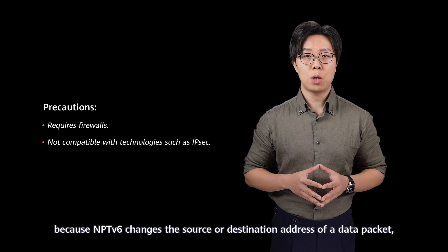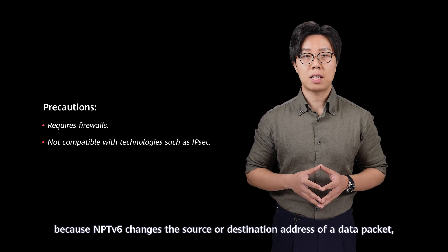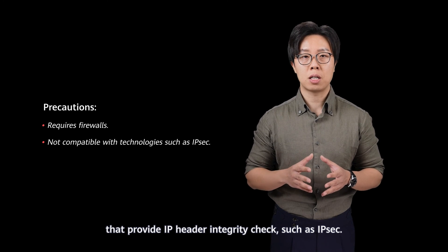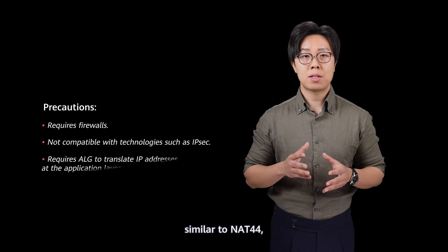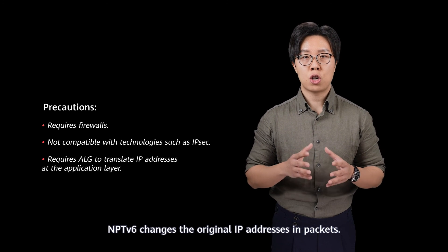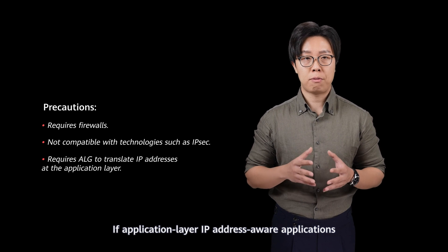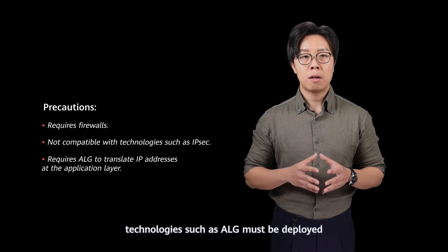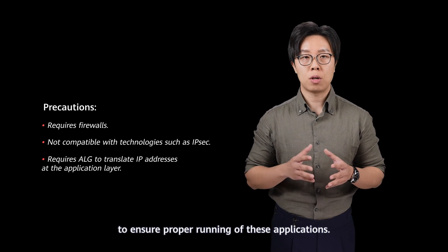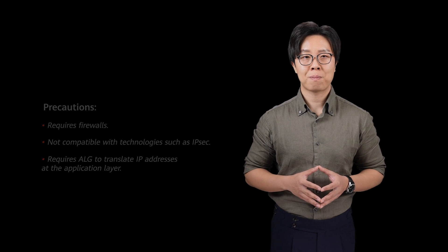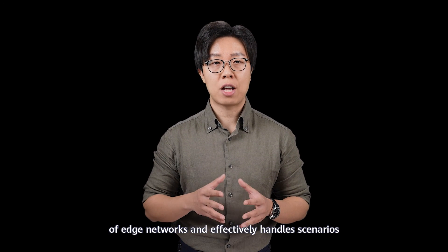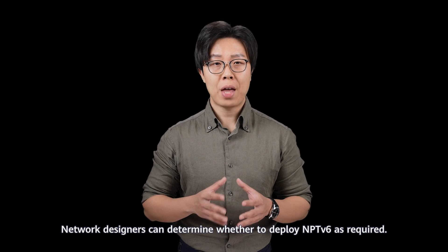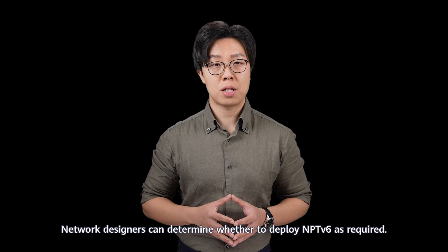Second, because NPTV6 changes the source or destination address of a data packet, it is not compatible with technologies that provide IP header integrity checks, such as IPsec. Third, similar to NAT44, NPTV6 changes the original IP address in packets. If IP address-aware applications such as FTP exist on the network, technologies such as ALG must be deployed to ensure proper running of these applications. This technology ensures independency of edge networks and effectively handles multi-homing scenarios. Network designers can determine whether to deploy NPTV6 as required.